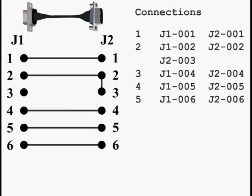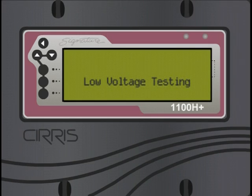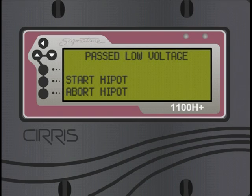Cirrus hypot testers first do a low voltage scan of all points looking for opens, shorts, and miswires before doing the hypot test. If the continuity test passes, a net by net hypot test proceeds as follows.